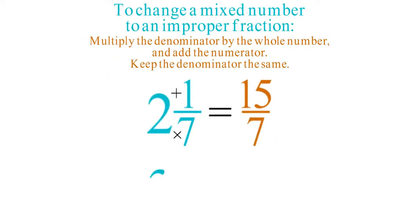Similarly, to change 3 and 4 fifths, multiply 5 times 3 equals 15 plus 4 equals 19. So the result is 19 fifths.